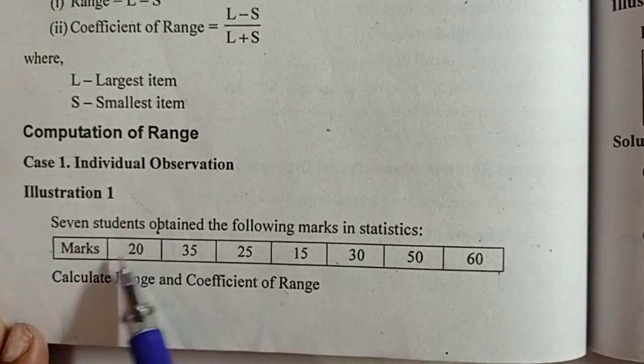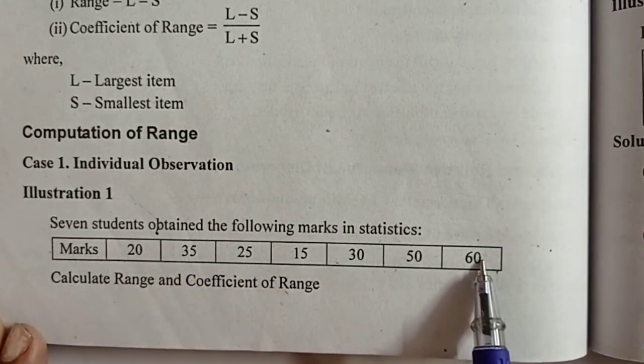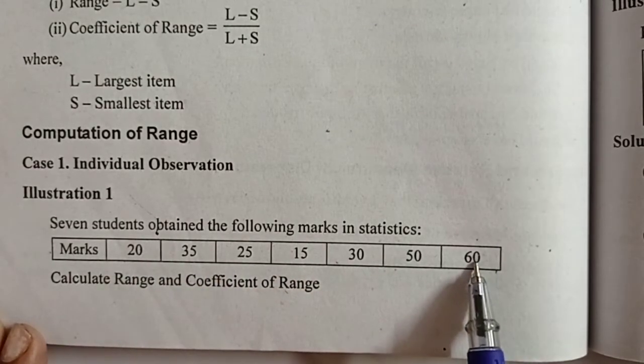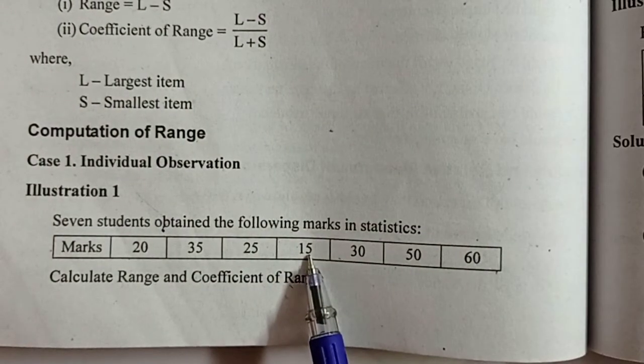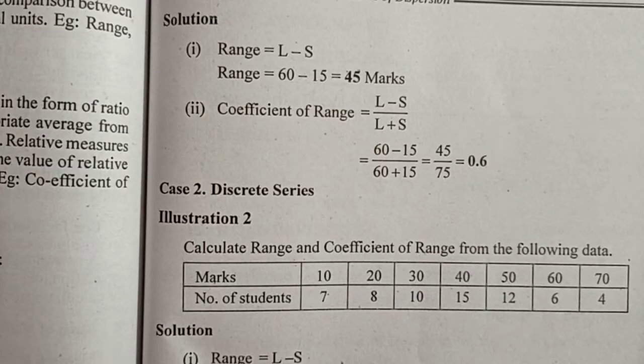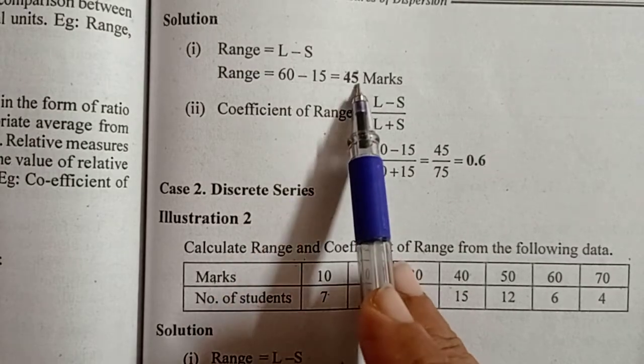Marks are given. In this question, the highest mark is 60 and the lowest mark is 15. Therefore, its difference is its range. Therefore, range is equal to 60 minus 15. The answer is 45.